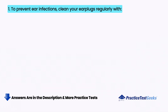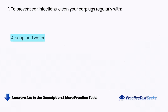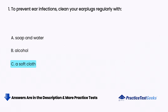To prevent ear infections, clean your earplugs regularly with: A. Soap and water, B. Alcohol, C. A soft cloth, D. Mineral spirits.